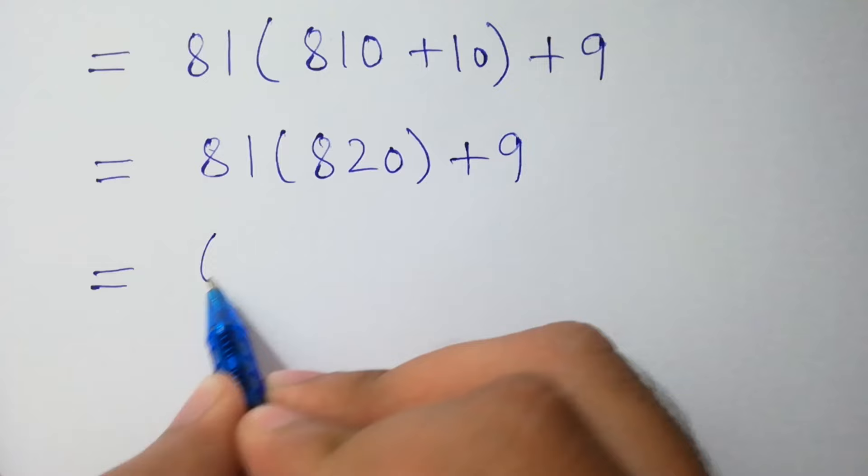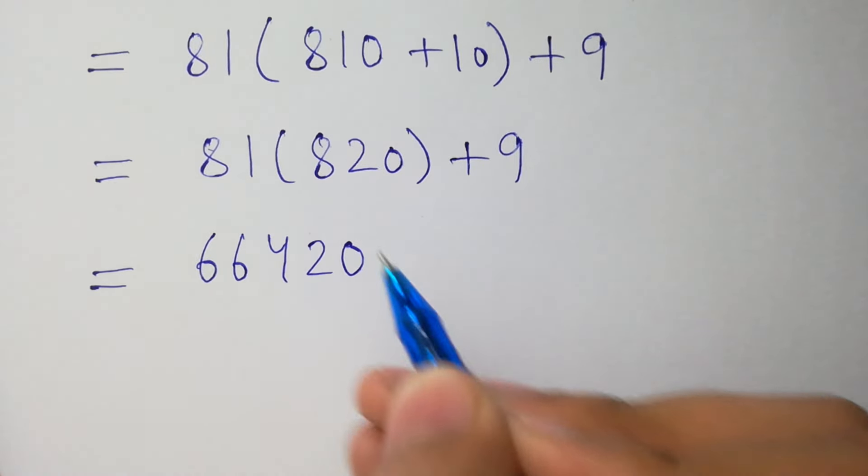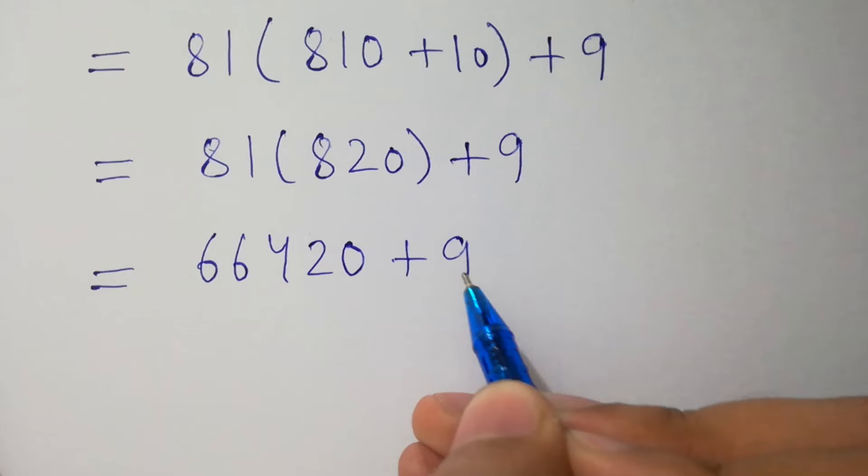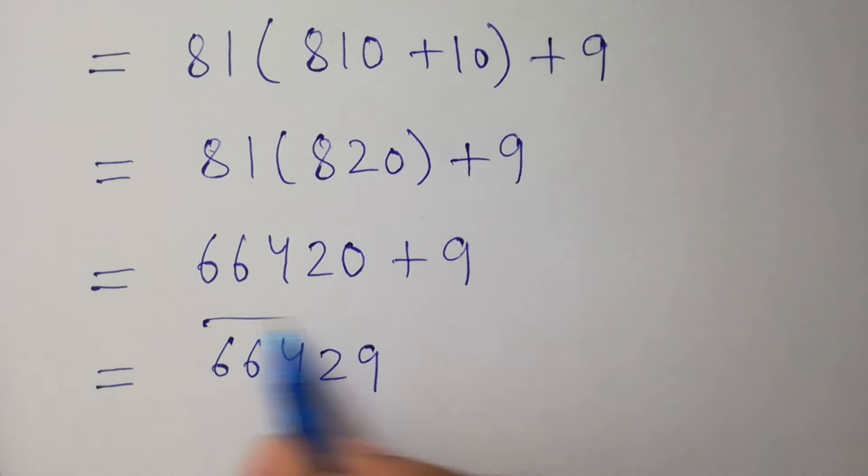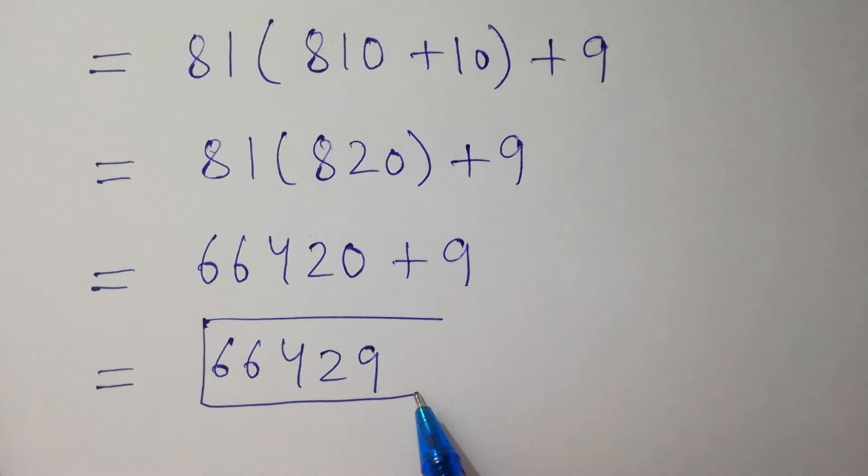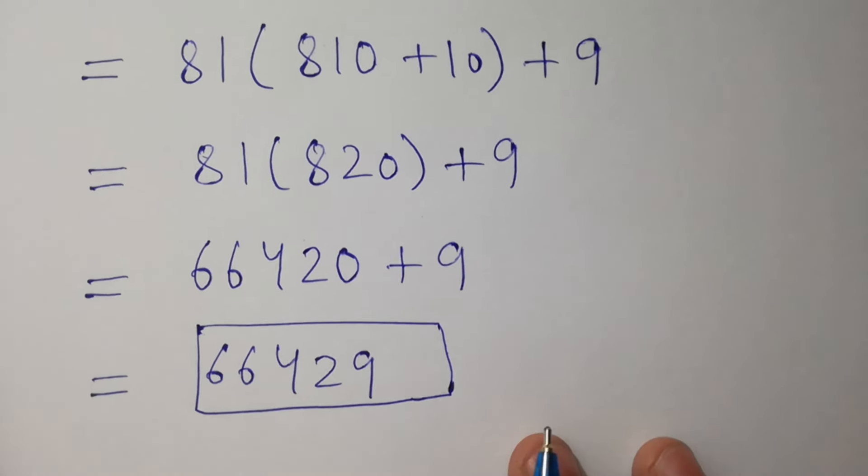81 times 820 equals 66,420 plus 9 equals 66,429, which is our correct answer. Thanks for watching this video.